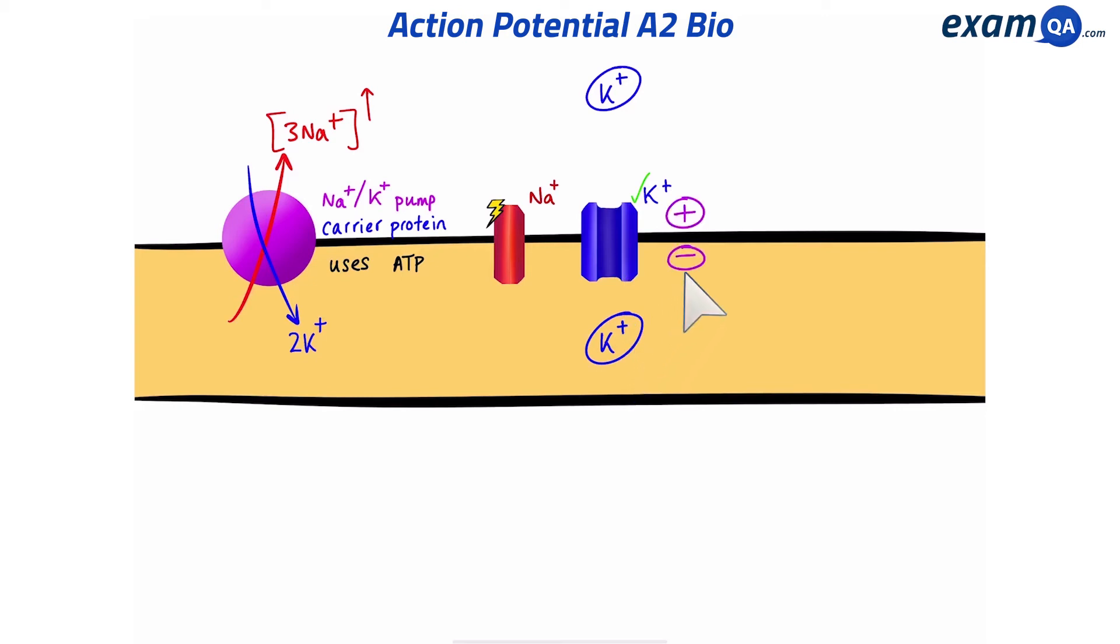Overall, the outside is more positive than the inside, and we get a resting membrane potential of minus 70 millivolts.